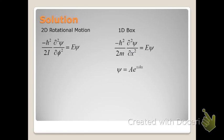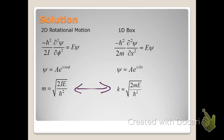The solutions will be very similar. For the one-dimensional particle in the box, the wave function was ae to the plus or minus ikx. We'll have a similar solution for two-dimensional rotational motion, replacing k with m, which represents a collection of constants involving moment of inertia. The only difference is we have replaced the mass with the moment of inertia.